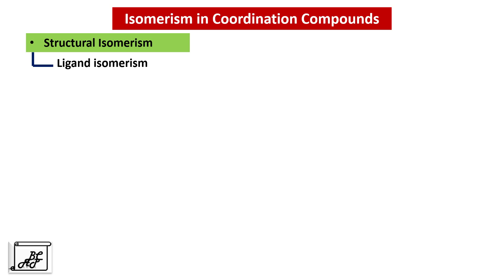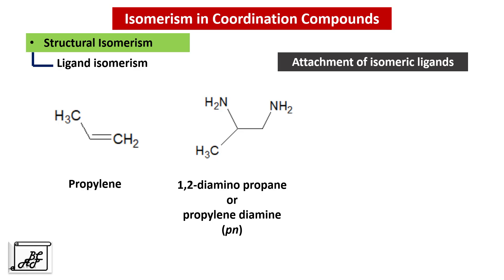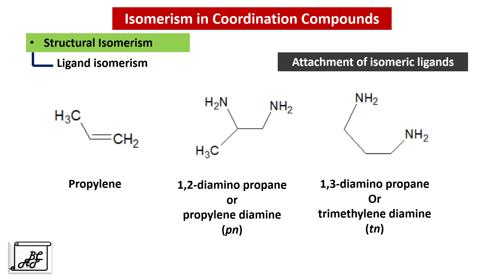Let's move to the next type: Ligand Isomerism. As the name says, it refers to the attachment of isomeric ligands to the central metal atom. Taking propylene as an example — if the double bond is broken and two ammonia molecules are added, in the first case it results in 1,2-diaminopropane (propylene diamine, Pn), and in the second case it results in 1,3-diaminopropane (trimethylene diamine, Tn). In Pn the two nitrogen atoms are close to each other, while in Tn the nitrogen atoms are slightly further apart.